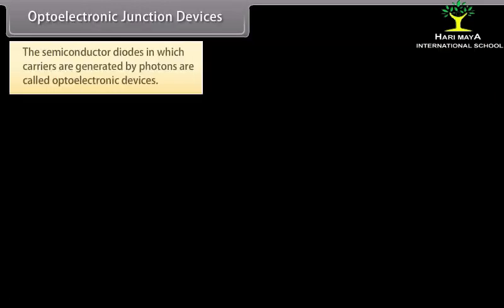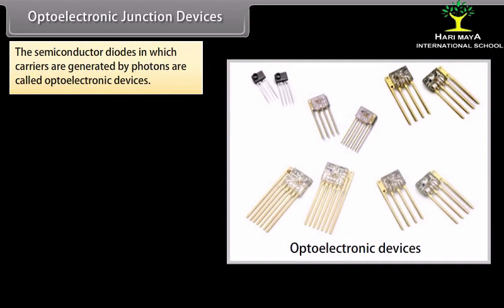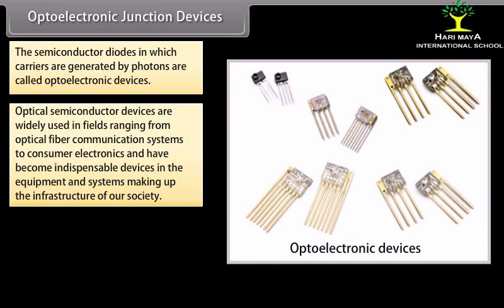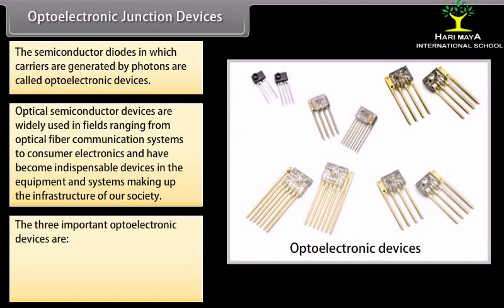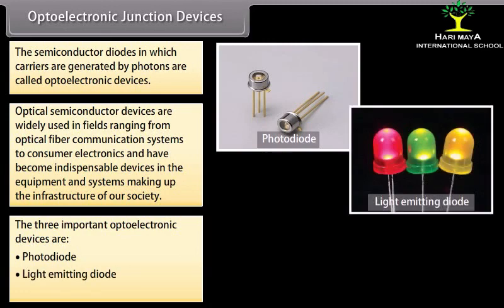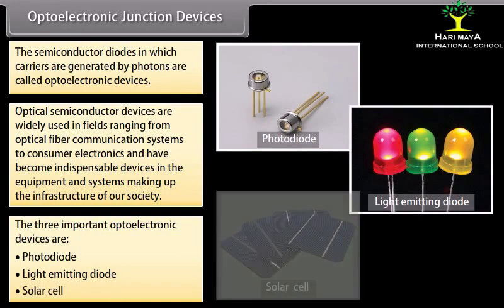Optoelectronic junction devices: The semiconductor diodes in which carriers are generated by photons are called optoelectronic devices. Optical semiconductor devices are widely used in fields ranging from optical fiber communication systems to consumer electronics. The three important optoelectronic devices are: photodiode, light emitting diode, and solar cell.